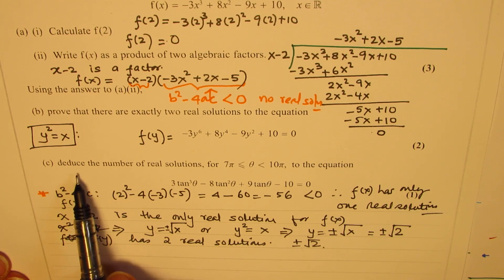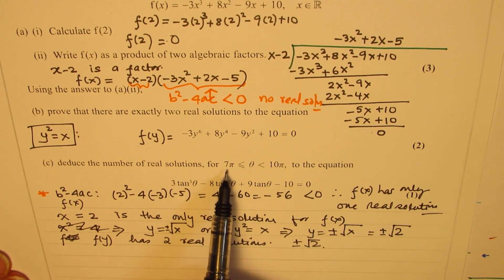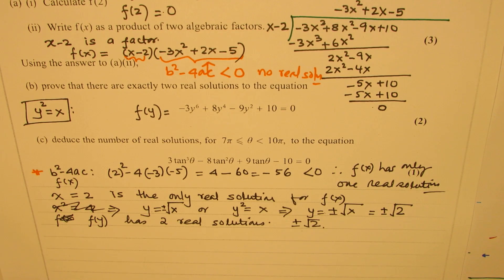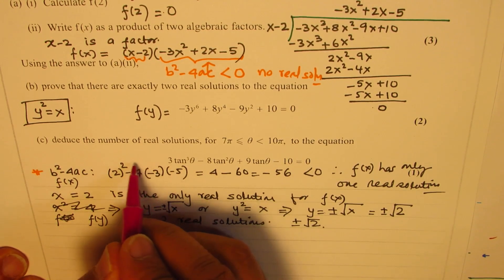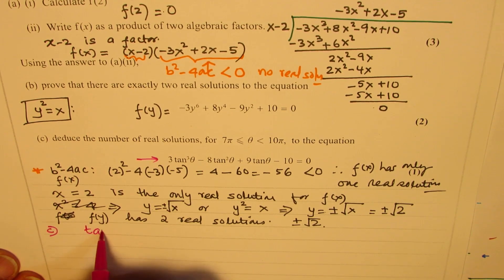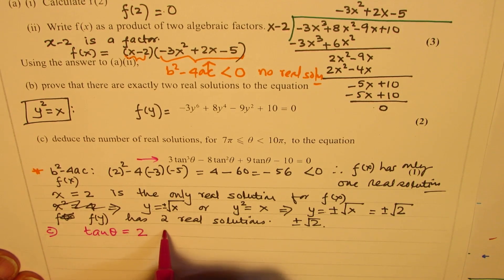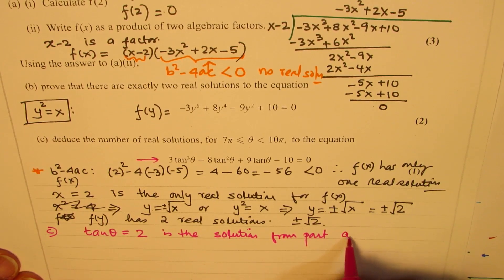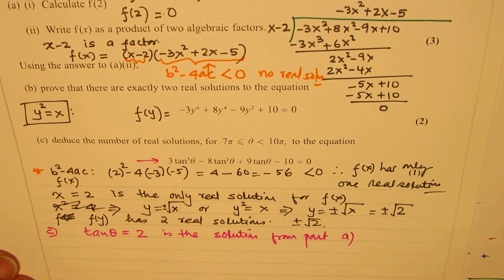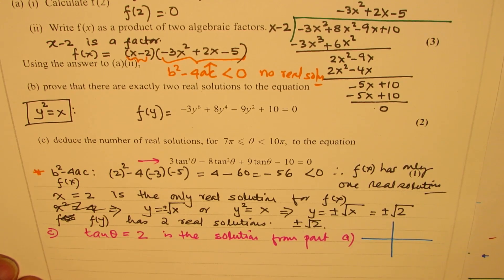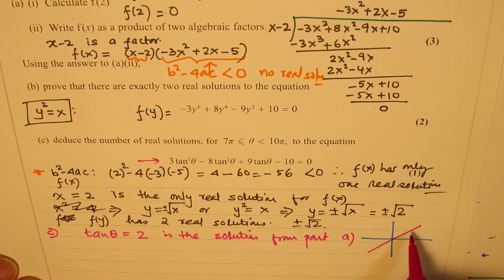Now let's look into part C, which is to deduce the number of real roots for theta greater than 7 pi and less than 10 pi. Here we have a trigonometric equation in terms of tan. We can say that tan theta equals 2 is the solution from part A, because this is the cubic equation in terms of tan. Tan is positive in two quadrants, so we have solutions in two quadrants.